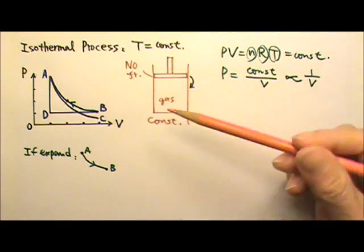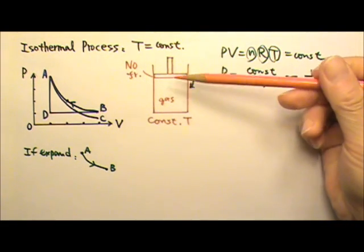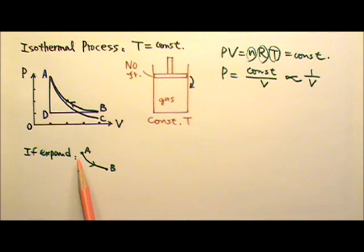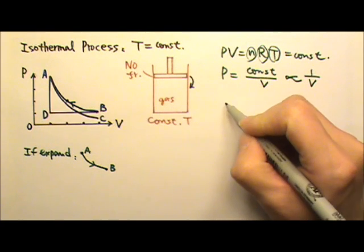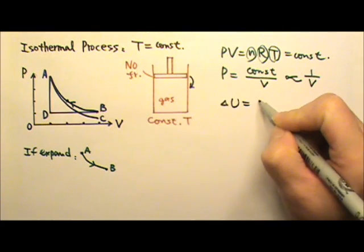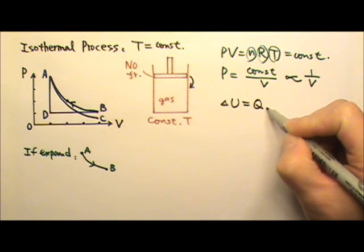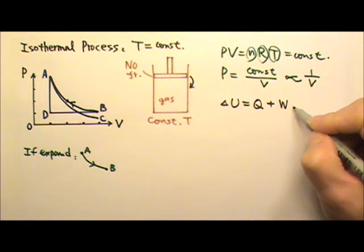Of course, if you pull the piston up to allow the gas to expand, the PV diagram would be A to B. Now let's look at the first law: delta U equals Q, the heat added to the gas, plus W, the work done on the gas.